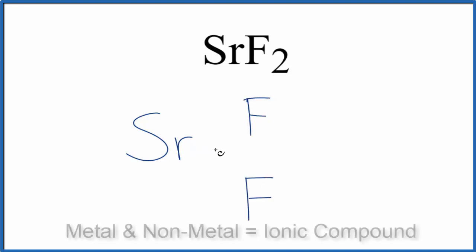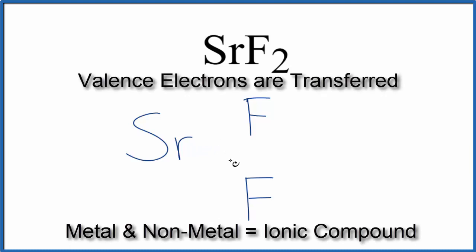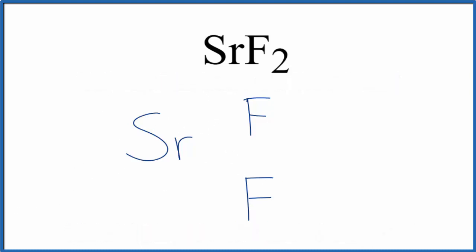Because strontium is a metal and fluorine is a nonmetal, this is going to be an ionic compound. Electrons are going to be transferred from the metal to the nonmetals here. So for strontium, that's in group 2 on the periodic table. It has two valence electrons. So let's just put them out here.